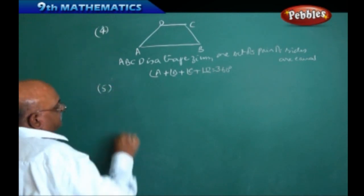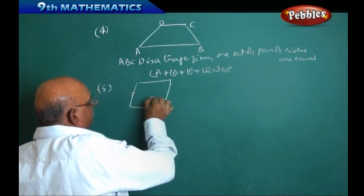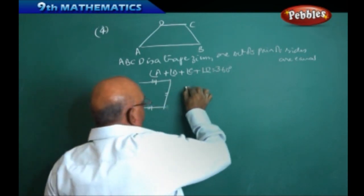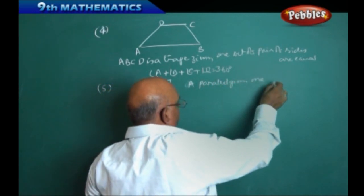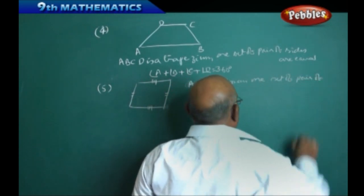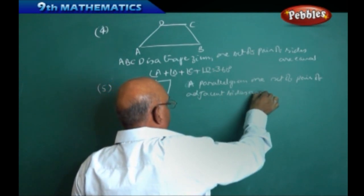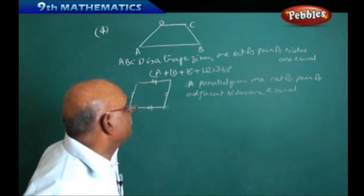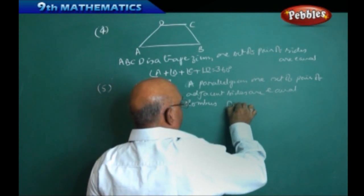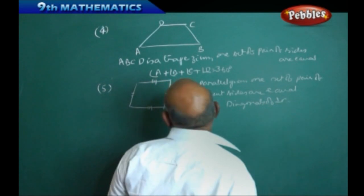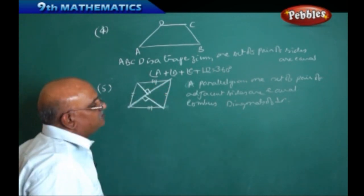In a parallelogram, if one set of a pair of adjacent sides are equal, then we call it a rhombus. An important property of a rhombus is that the diagonals are perpendicular to each other. So the two diagonals intersect at right angles — that is the key property of a rhombus.